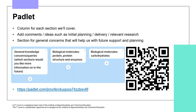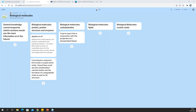Participants added ideas to the Padlet for carbohydrates and lipids, including teaching in conjunction with the properties of a phospholipid bilayer, and making crosslinks between topics such as glycoproteins found in the phospholipid bilayer. We are now going to look at nucleic acids. Based on time, this will be a quick overview of where nucleic acids are found within the specification.